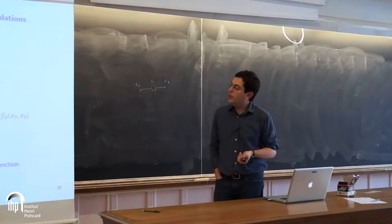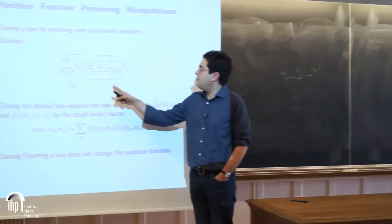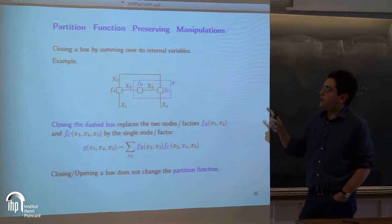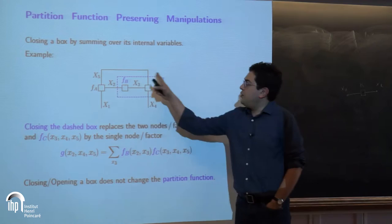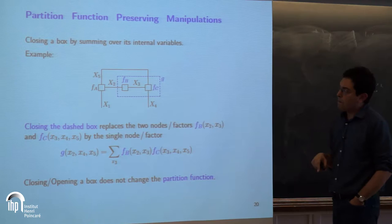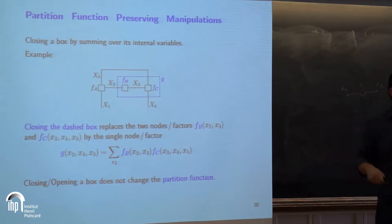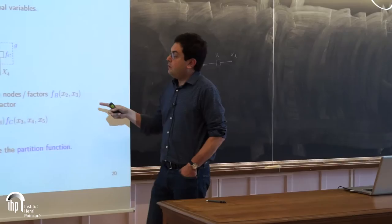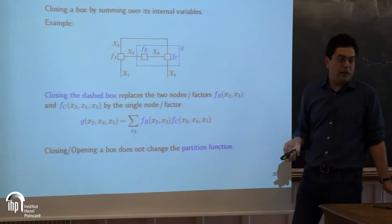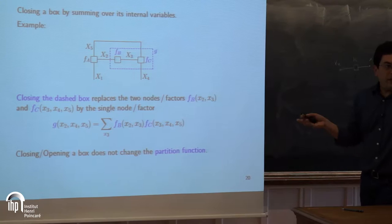I explain a couple of manipulations on this graph that keep the partition function unchanged. For example, if you have factor f_c as a function of x3, x4, x5 and factor f_b as a function of x2 and x3, you can define a box g as a function of x4, x2, x5 by marginalizing out the internal variables — the partition function will not change. The reverse also holds. These are what people call vertex merging, splitting, opening or closing the box — these manipulations do not change the value of Z.